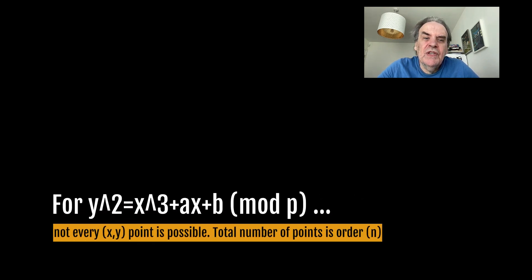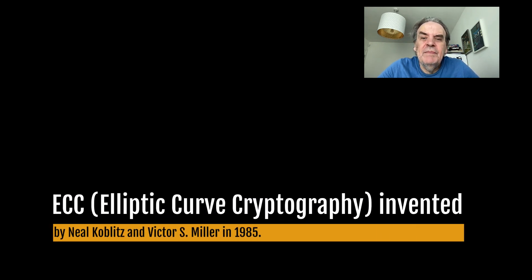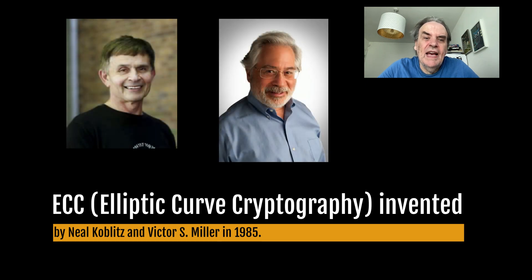For an elliptic curve of y² = x³ + ax + b mod p, not every x,y point is possible. The total number of points is then defined as the order of the curve, or n. ECC or elliptic curve cryptography was invented by Niall Koblitz and Victor S. Miller in 1985.